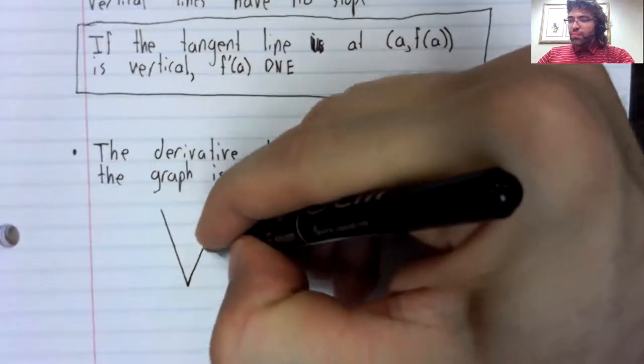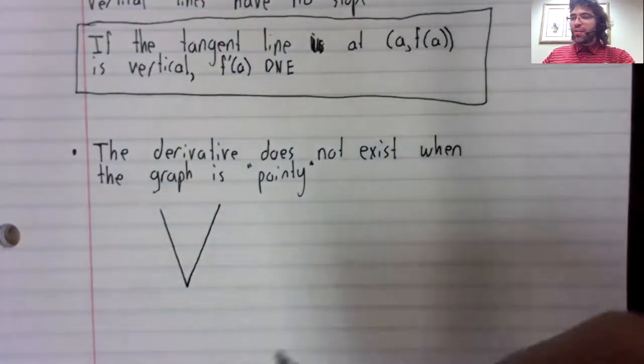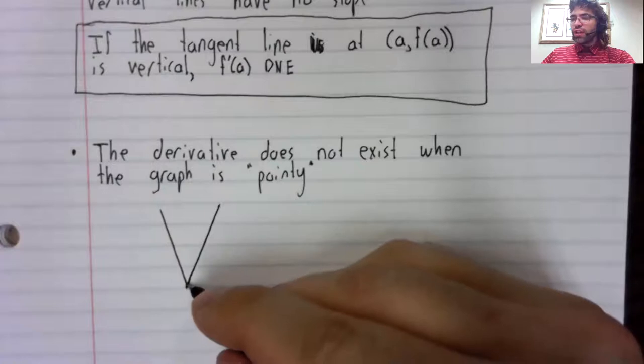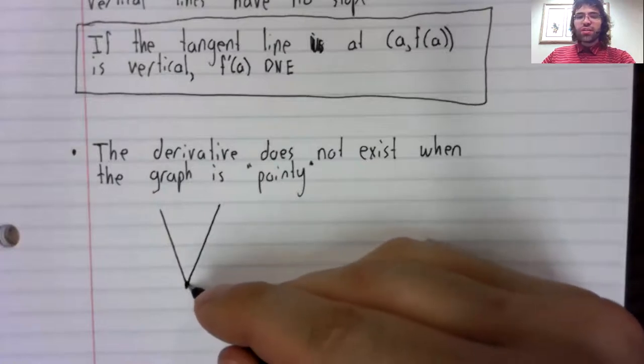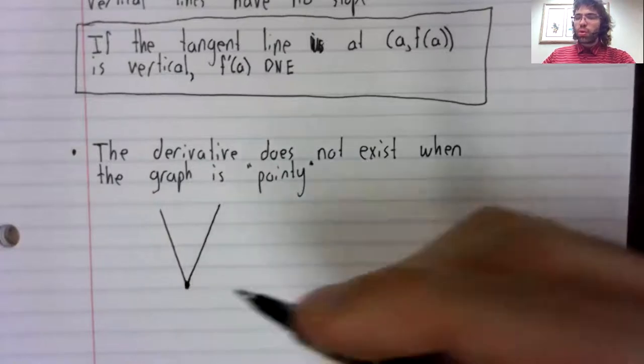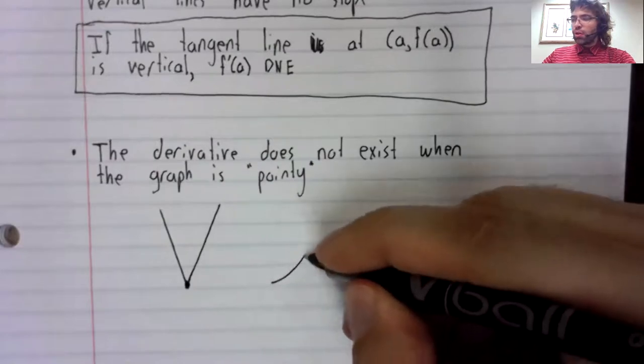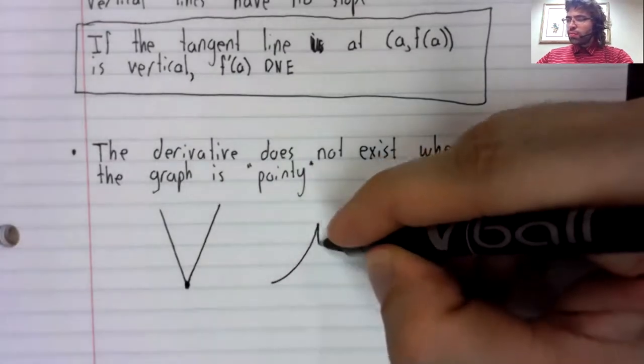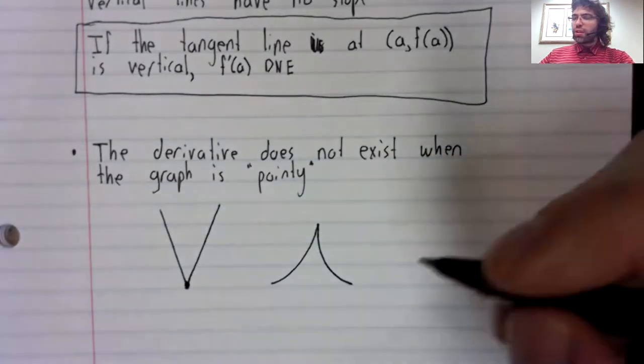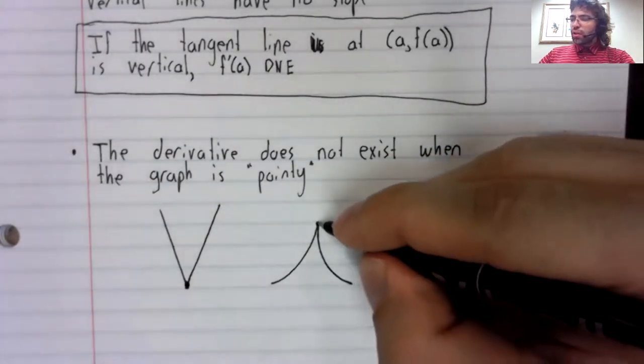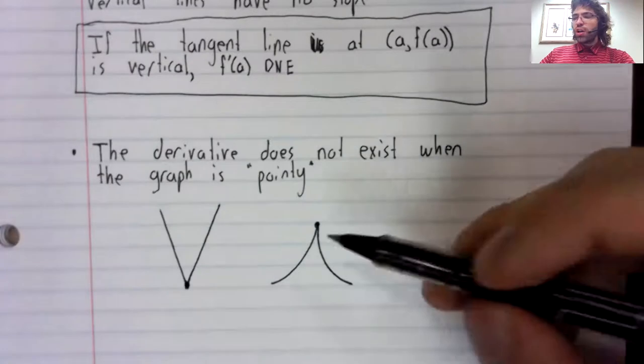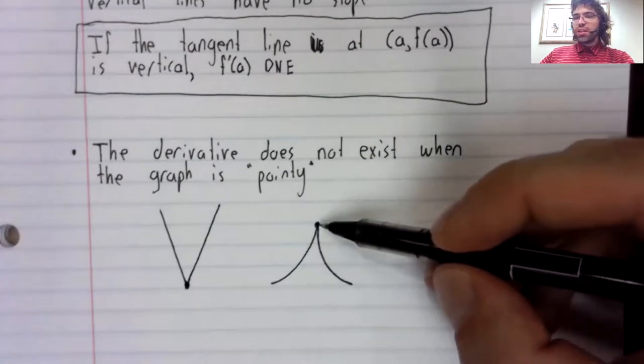So something like this. The derivative does not exist at this sharp corner. Or a graph like this. The derivative does not exist here.